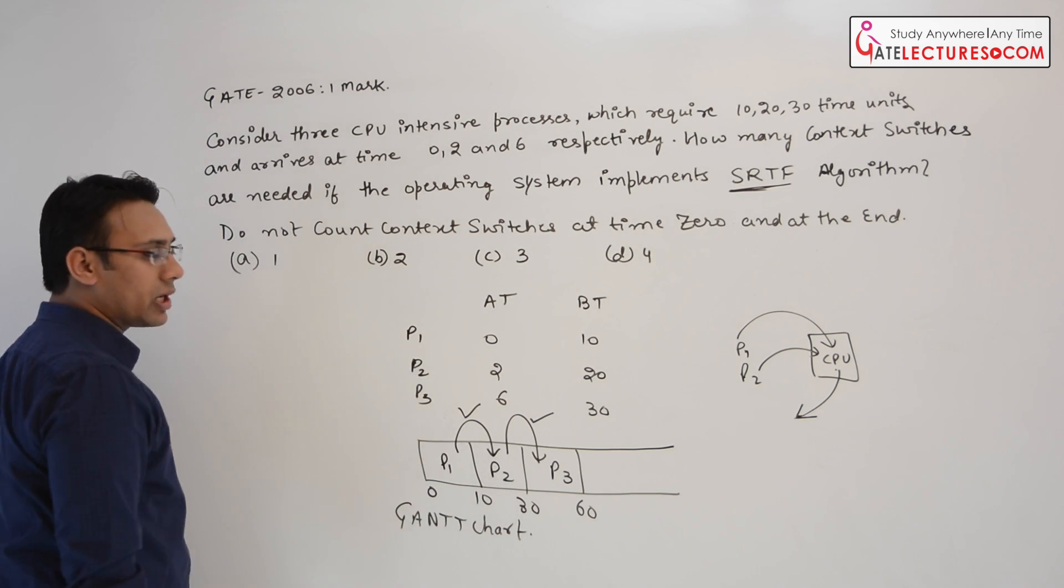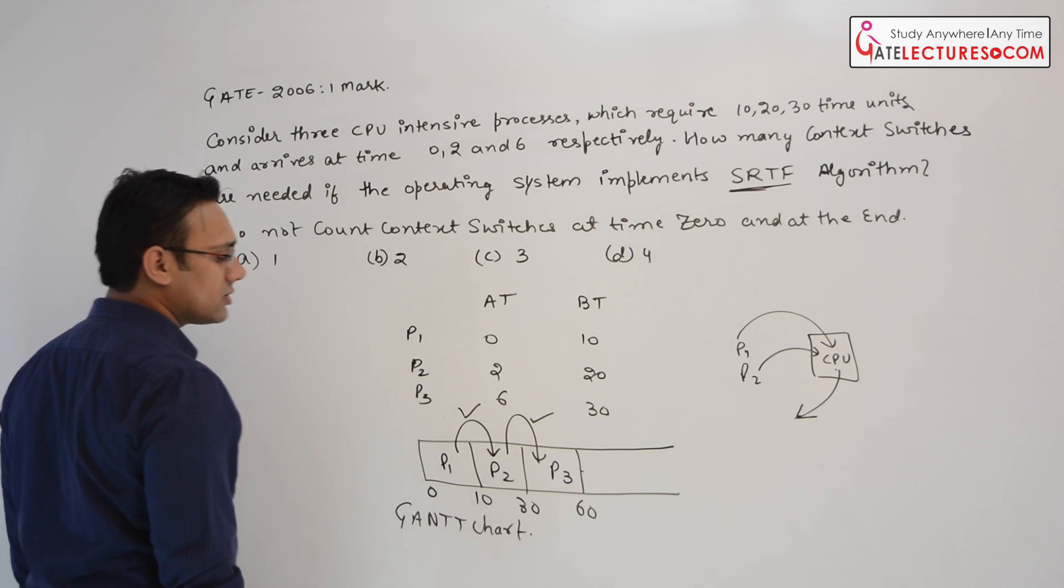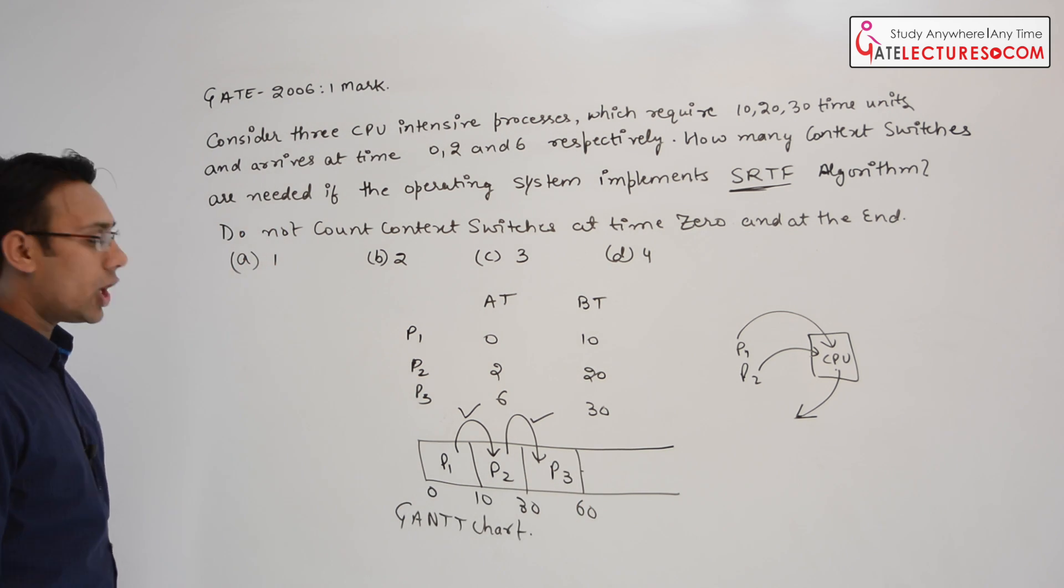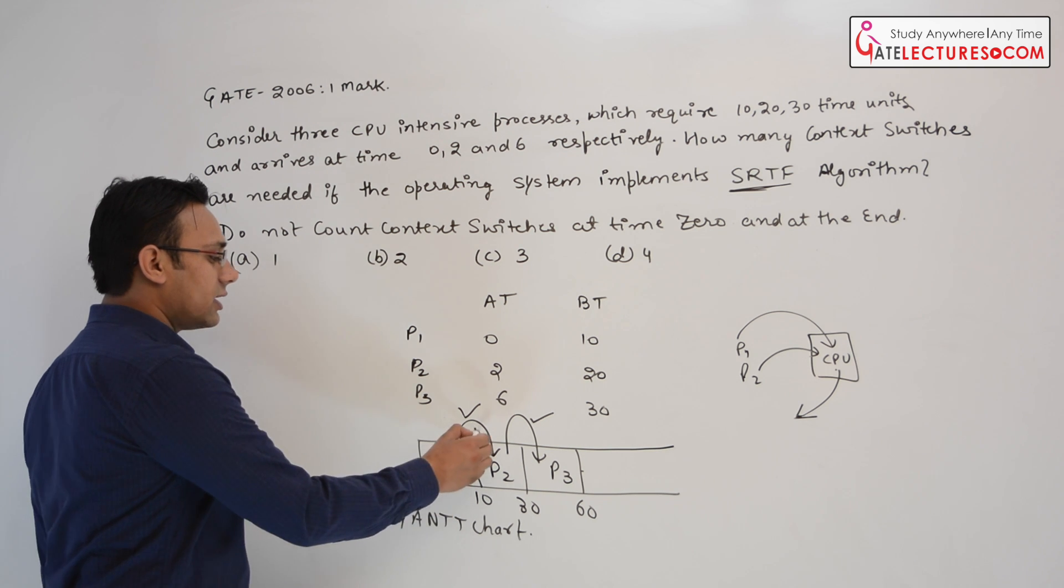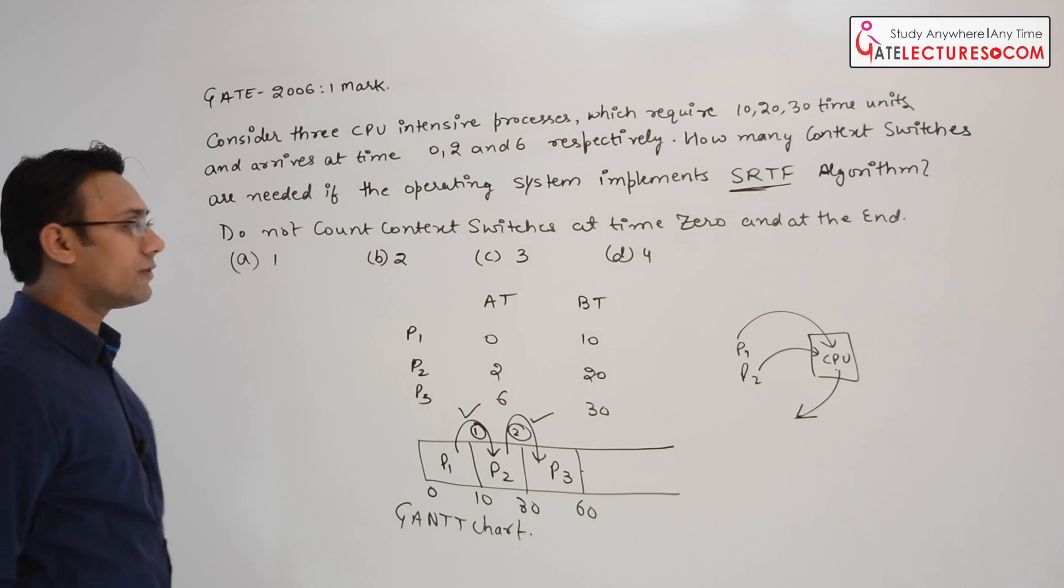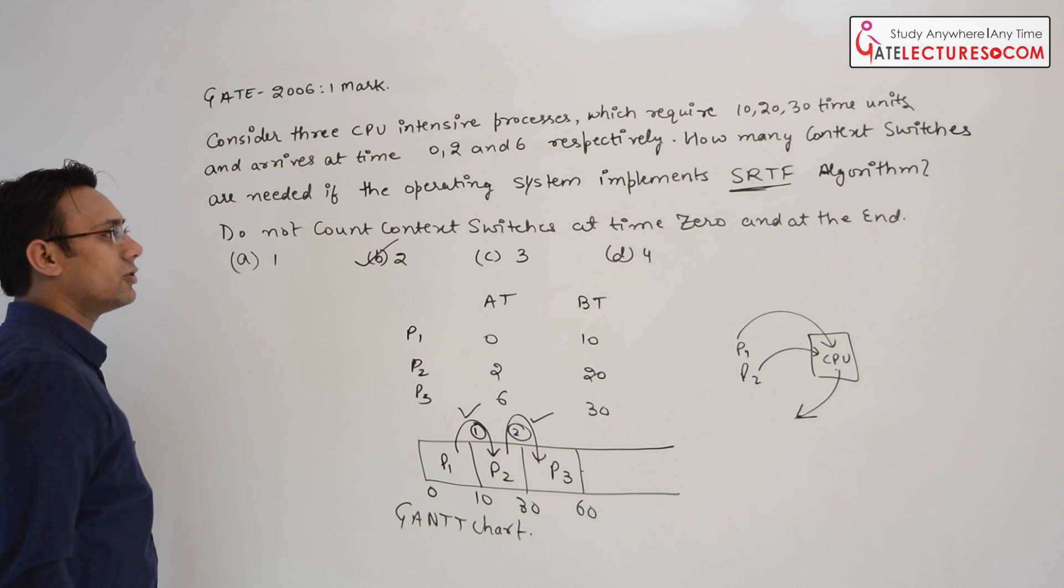And they have already mentioned that do not count the context switch at time 0 and at the end. Therefore we are not going to count this context switch and we are not going to count this context switch. Now how many context switches are there? This is the first context switch and this is the second context switch. Therefore the answer is B for this question.